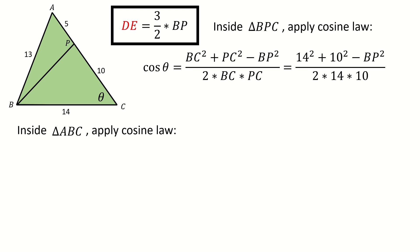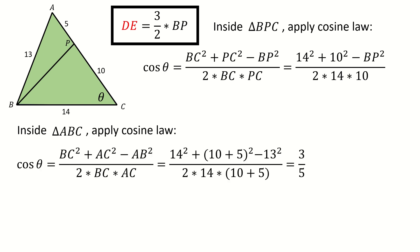Let's look at triangle ABC. We apply the cosine law again. For triangle ABC, we know the length of all the sides: AB is 13, BC is 14, and AC is 5 plus 10, which is 15. So we get cosine theta equals three-fifths.